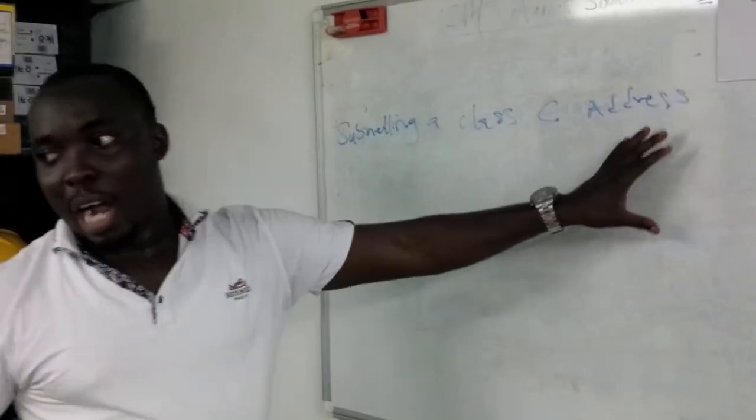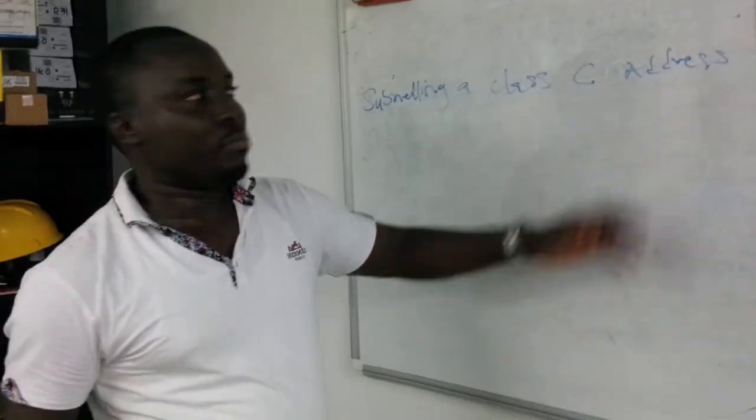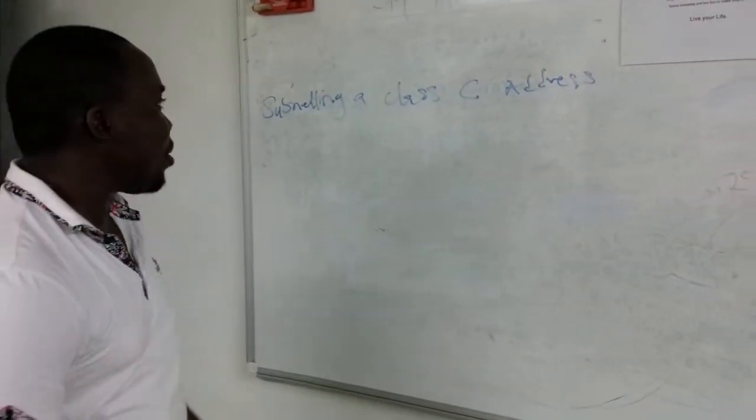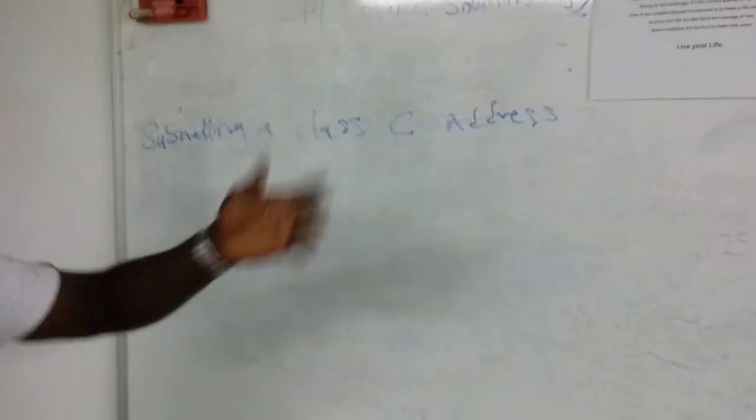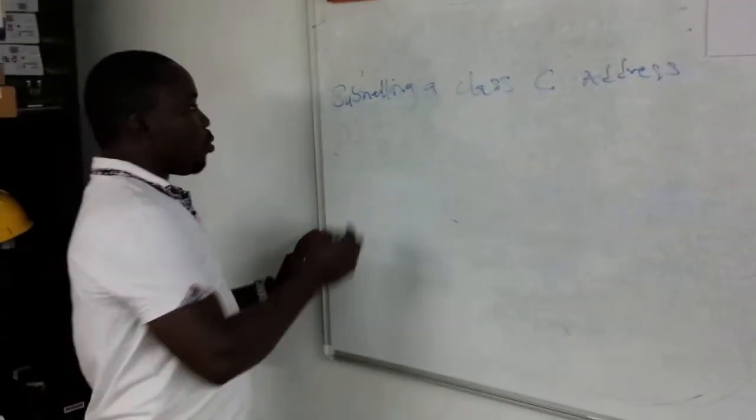How we can subnet a Class C IP address. A lot of people have problems with this and tend to use third-party applications or Excel. But if you know what you're doing, you can pick an IP address from this class, subnet it immediately, and then do what you need to do with it.